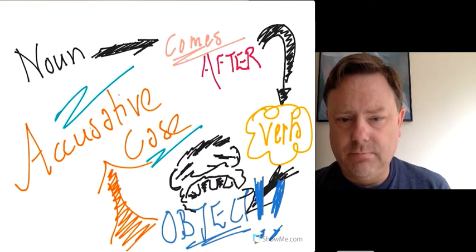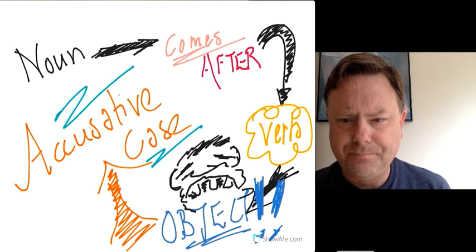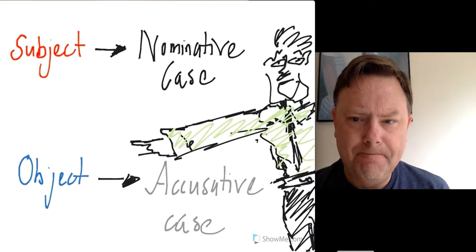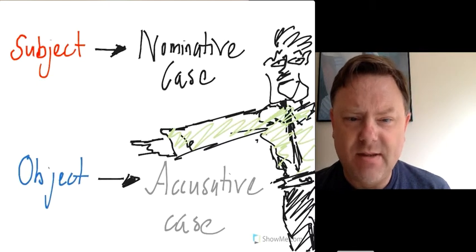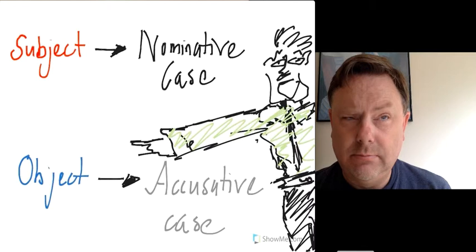So the noun that comes after the verb, which is known as the object, is known as the accusative case, ladies and gents. So eventually we got that clear. So the subject is the nominative case. Now, object is the accusative case. Okay, good.